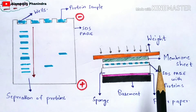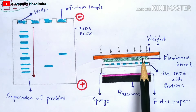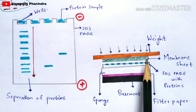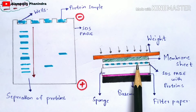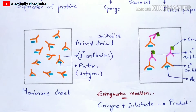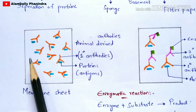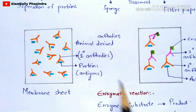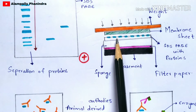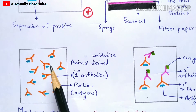To summarize step two: you place a membrane sheet on the SDS-PAGE and apply pressure, causing the proteins present on the SDS-PAGE to transfer and get attracted to the membrane sheet. You then remove the weight and the membrane sheet. On this membrane sheet the proteins are now present, transferred from the SDS-PAGE.